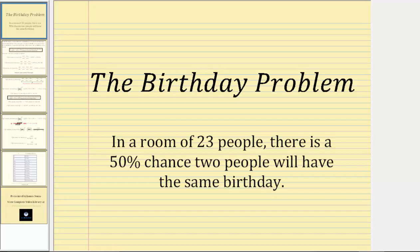Welcome to the birthday problem. In a room of 23 people, there's a 50% chance two people will have the same birthday. It would seem like it would take more than 23 people to have a 50% chance of two people having the same birthday, but it really doesn't. Let's take a look at why.